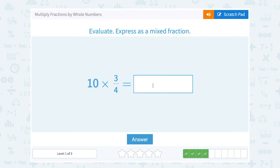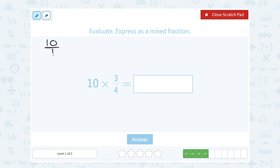10 times 3 over 4. You can make 10 a fraction by saying 10 over 1, and then we're going to multiply that by 3 over 4. If we multiply straight across, 10 times 3 is 30, and 1 times 4 is 4. This is an improper fraction. The top is bigger than the bottom. So we want to change it to be a mixed number.